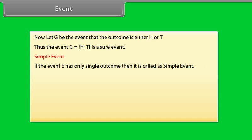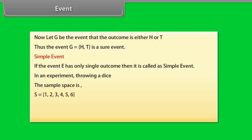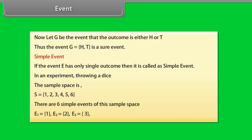Simple event: if the event E has only a single outcome, then it is called a simple event. In an experiment of throwing a dice, the sample space is S = {1, 2, 3, 4, 5, 6}. There are six simple events: E1 = {1}, E2 = {2}, E3 = {3}, E4 = {4}, E5 = {5}, and E6 = {6}.